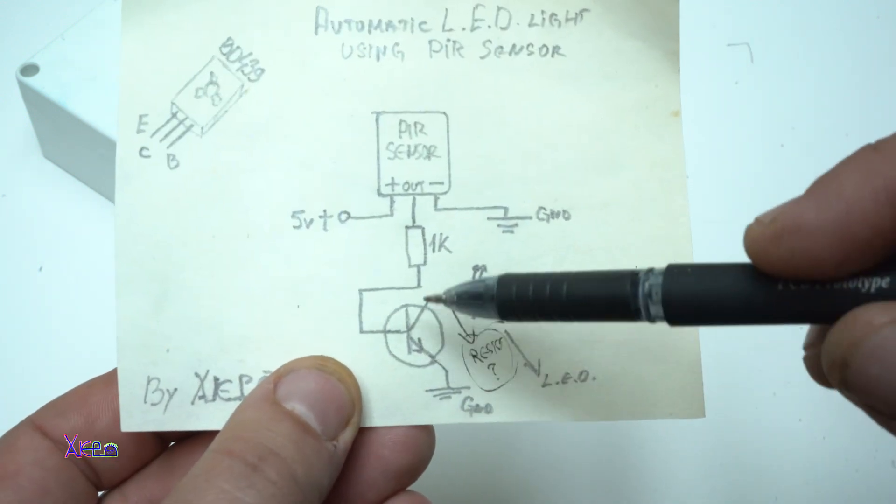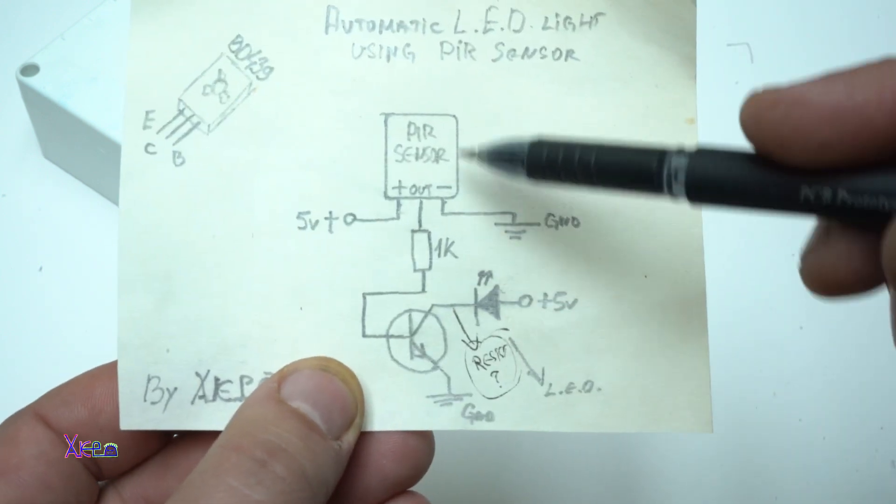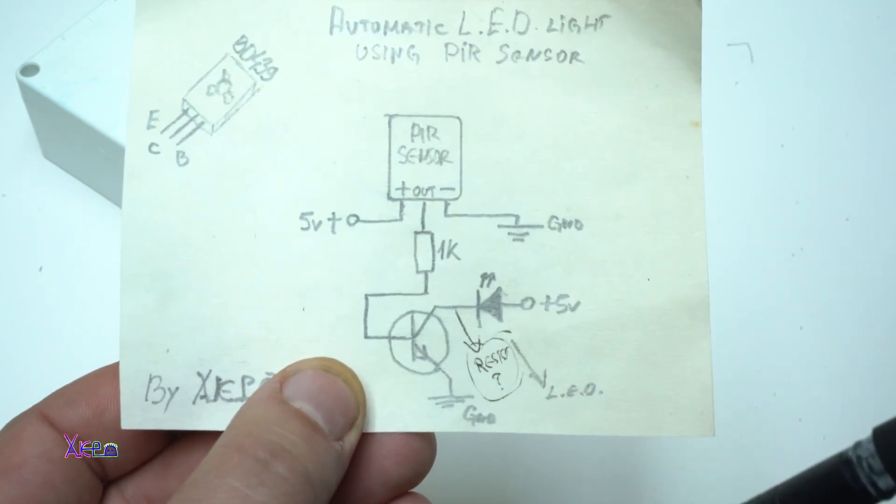Emitter goes to ground. The collector gives five volts because this circuit will work on five volts.